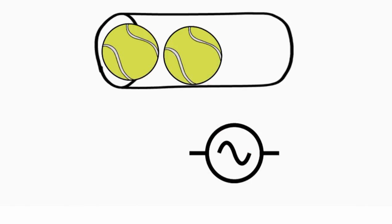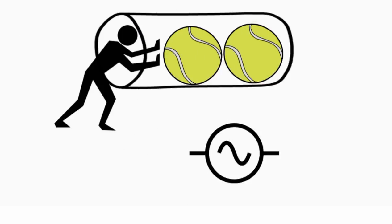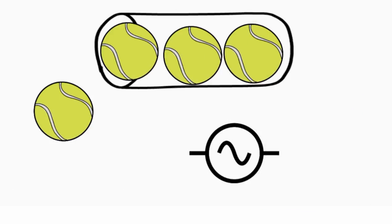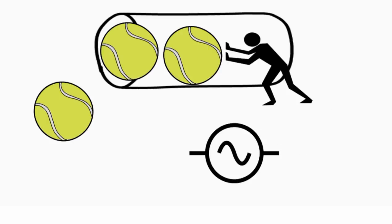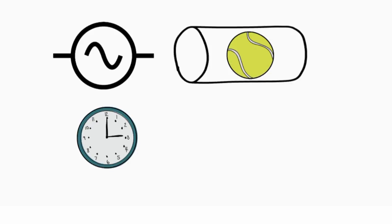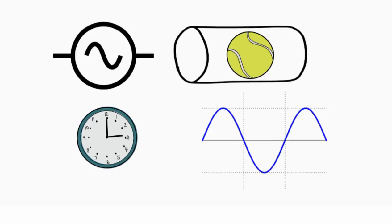Alternating current, on the other hand, is when you push a ball in one end and it pops out the other, then push one from the other end and this pops out from the former. Over time, for a constant frequency, the total change in distance for any ball inside the tube is zero.